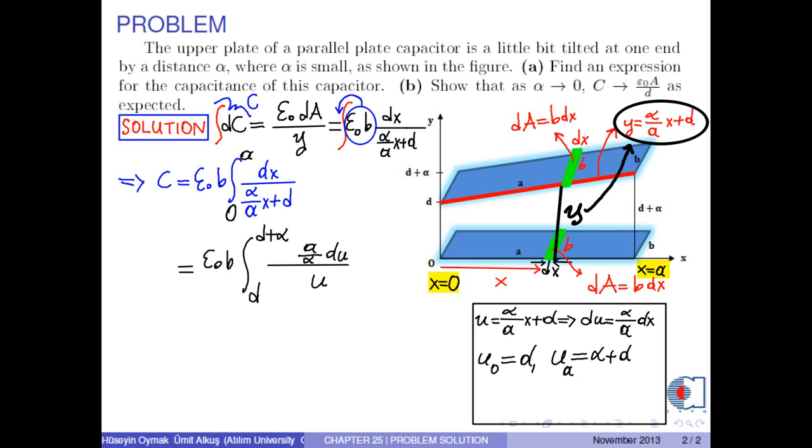Here, a and alpha can be taken outside the integral sign. So, we get epsilon zero times a times b over alpha times the integral of du over u with the integral limits d and d plus alpha.